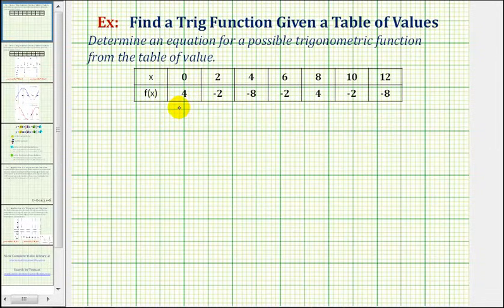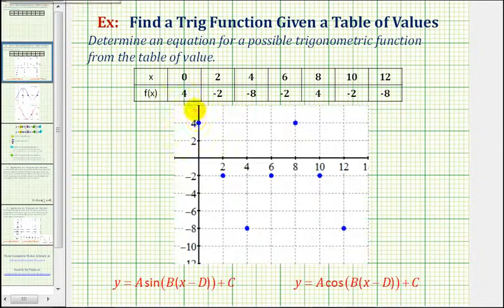The first step is to plot these points on the coordinate plane so we can see how the points are behaving. Here's the point (0, 4), (2, -2), (4, -8), (6, -2), (8, 4), (10, -2), and (12, -8).